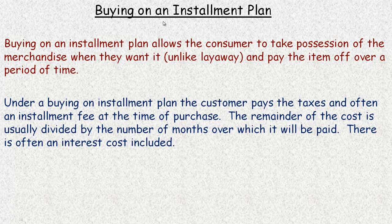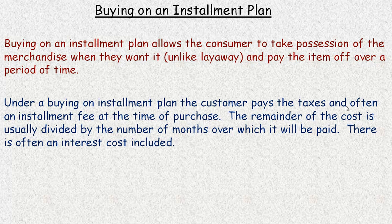In this tutorial we're going to take a look at buying merchandise on an installment plan. An installment plan allows the consumer to take possession of the item right at the beginning. Unlike layaway, where you pay a certain amount at the beginning and the store holds it until you have enough money, then you go and pay the rest. Under an installment plan, you get the item at the beginning and pay it off over a period of time, often just a number of months. The customer pays the taxes and often some kind of an installment fee or deferral fee at the time of purchase. The deferral fee could be a fixed amount or a percentage of the purchase price. The remainder of the cost is usually divided by the number of months over which it will be paid, and there's often an interest cost included.